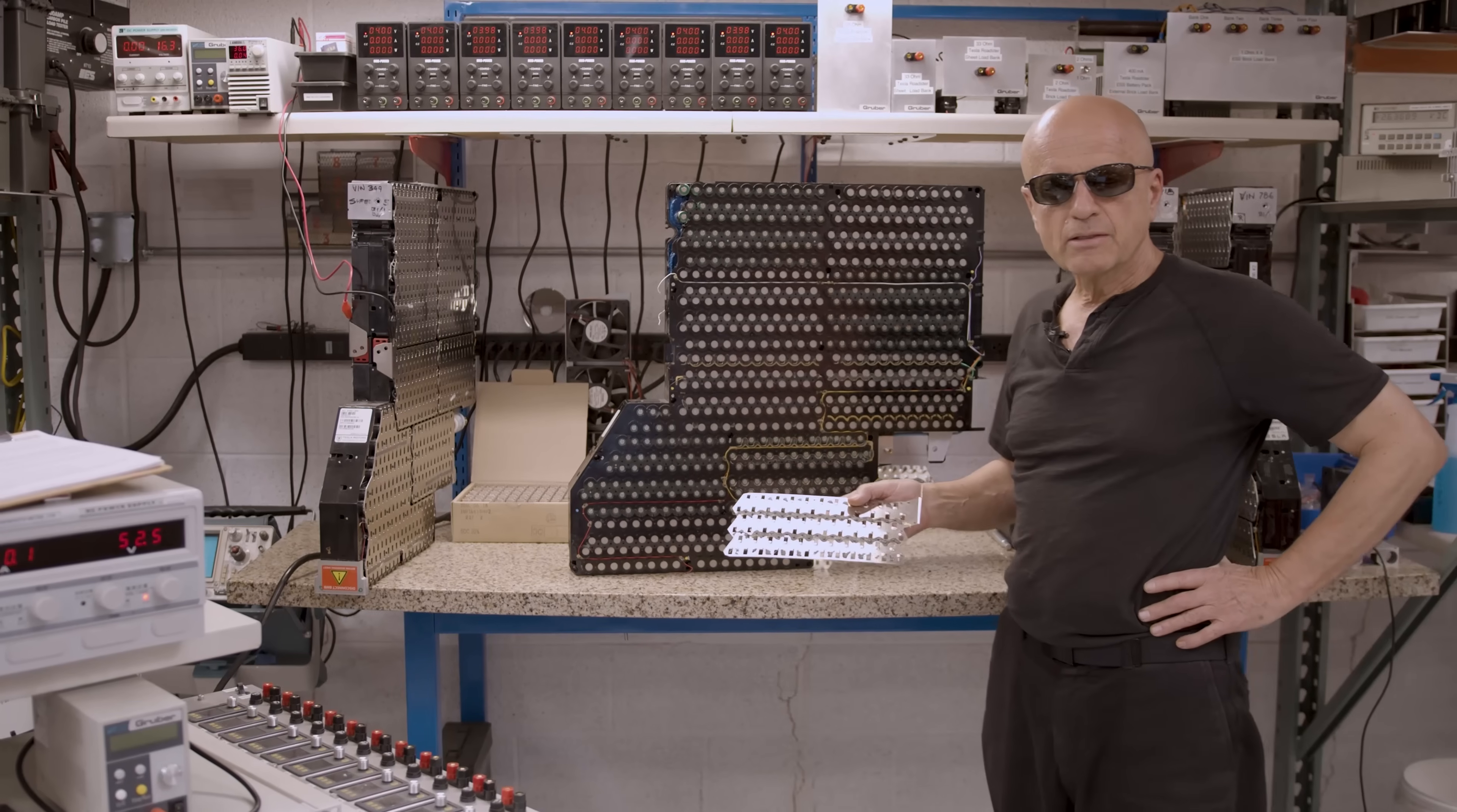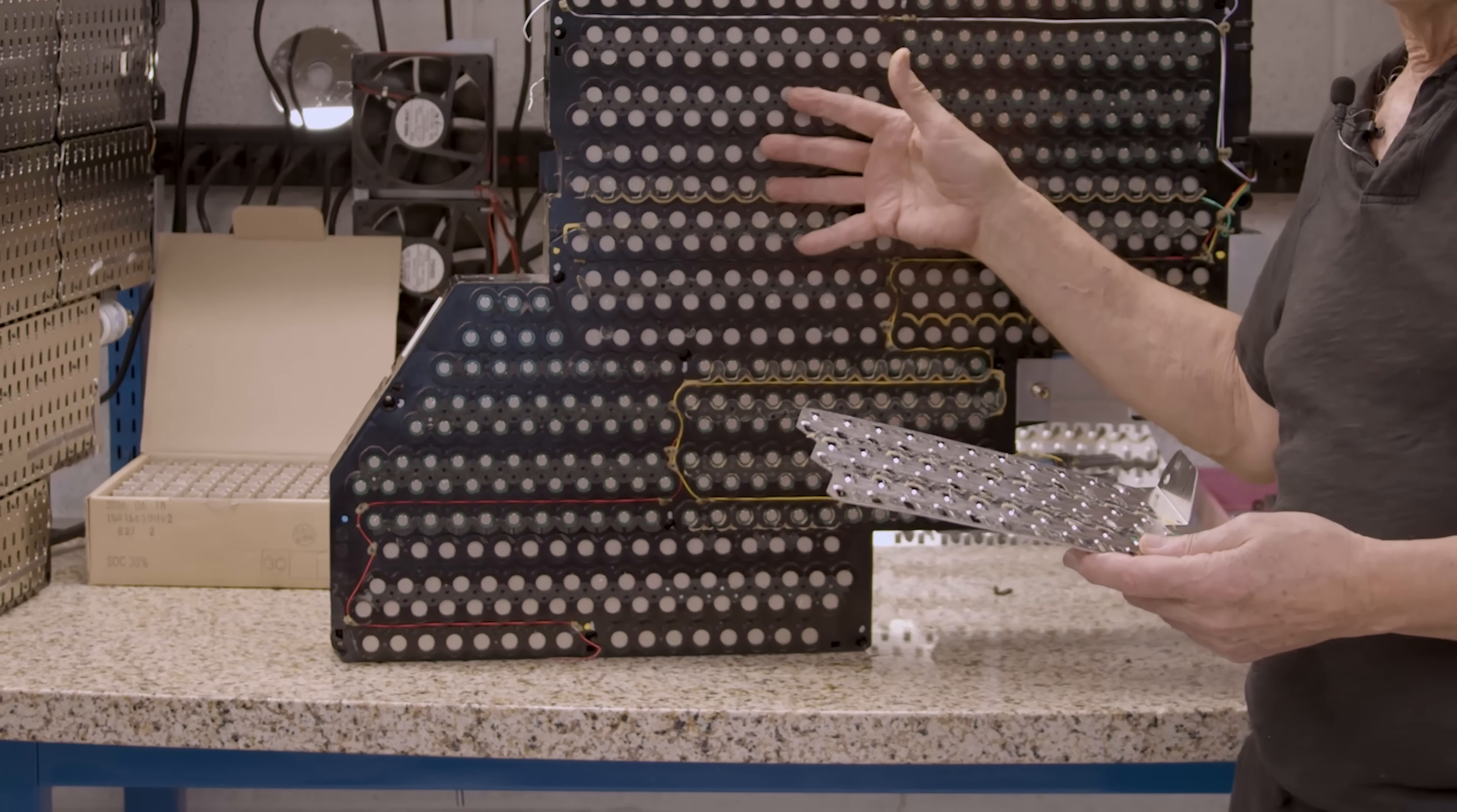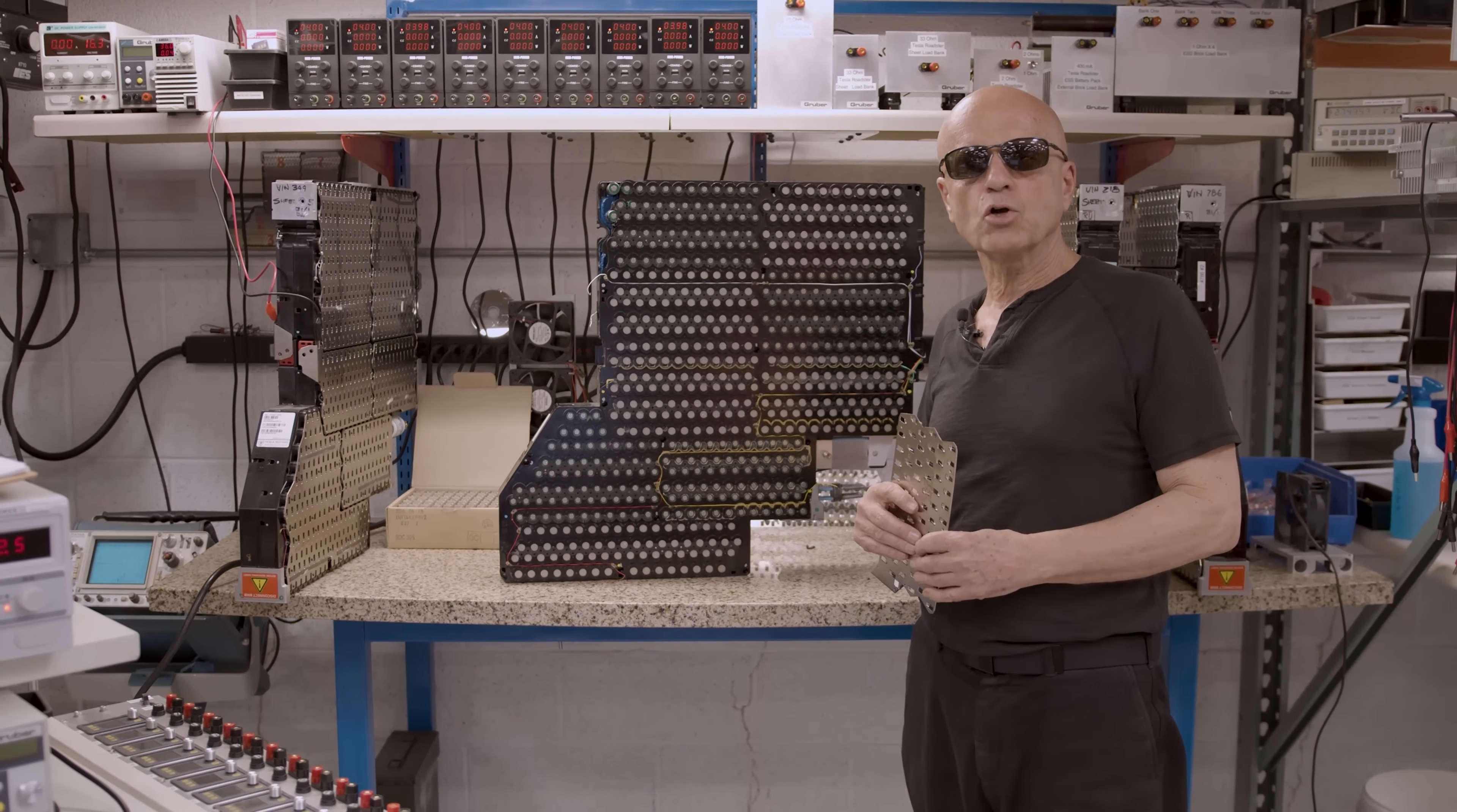In the day, Tesla had wire bonders and some automation robotics that connected all of these tiny wires in sections to each of the cells. To create a battery pack for each Roadster, they had to create over 26,000 of these battery sheets, since each car had 11 inside that large enclosure.